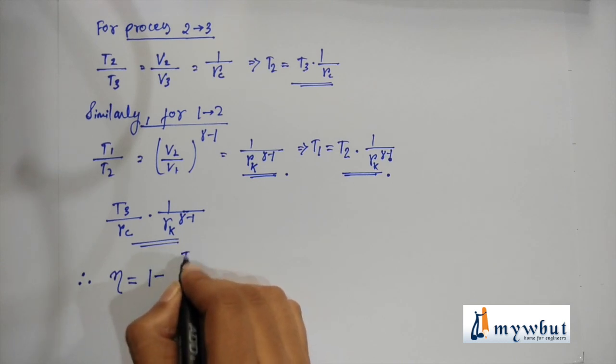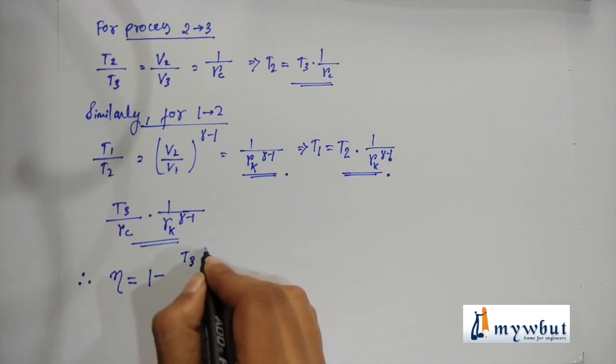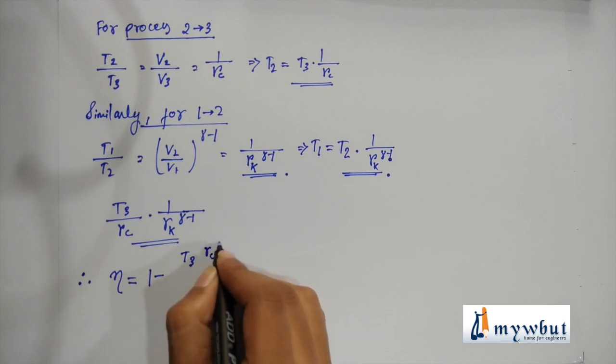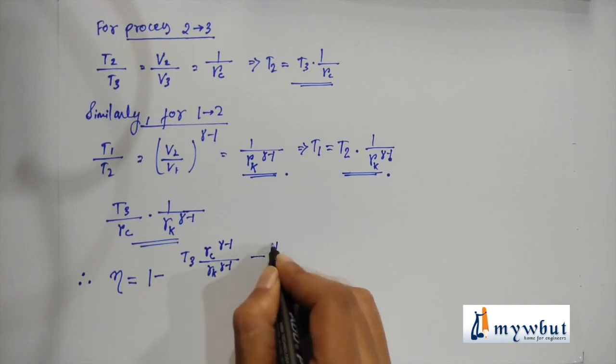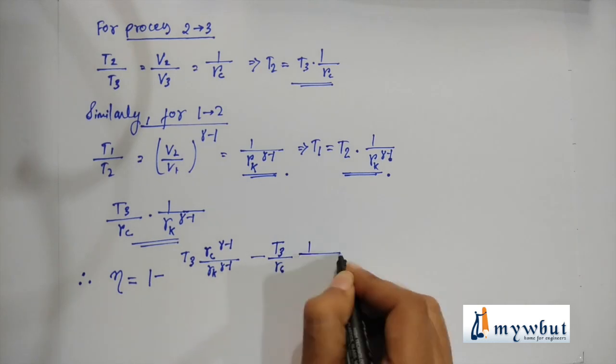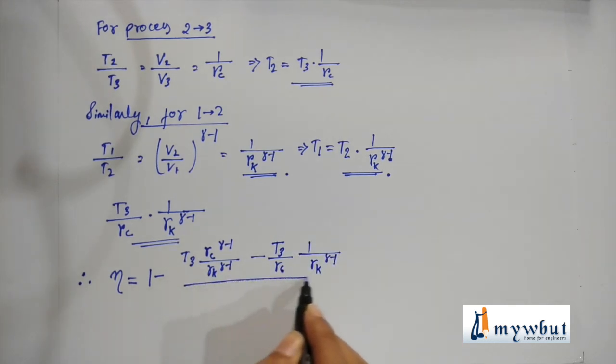Divided by gamma times (T3 - T3/RC). So we get the final equation as efficiency of diesel engine is equal to 1 - [1/RK^(gamma-1)] * [(RC^gamma - 1)/(gamma*(RC - 1))].